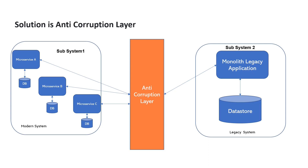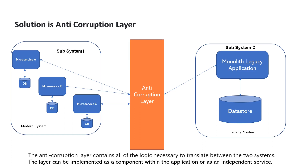We use an anti-corruption layer between the legacy and modern system. Whenever these systems need to talk to each other, they don't talk directly — they communicate through the anti-corruption layer. Whatever conversion is required between both systems, because they may use different technologies or different ways of communication, all the conversion logic should be part of the anti-corruption layer. This way both systems are isolated but can still work together, ensuring the new system does not inherit the weaknesses of the old system.